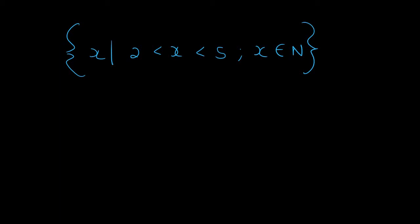Hello everyone. So here we've got a set builder notation and what I want us to do is to put this on a number line.